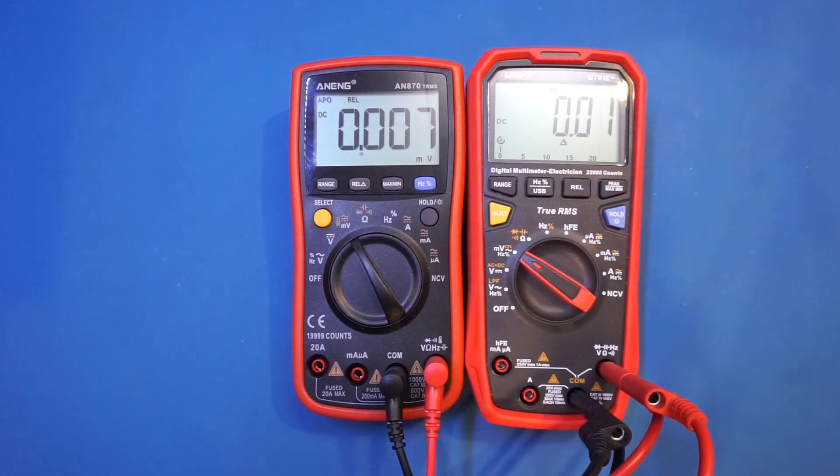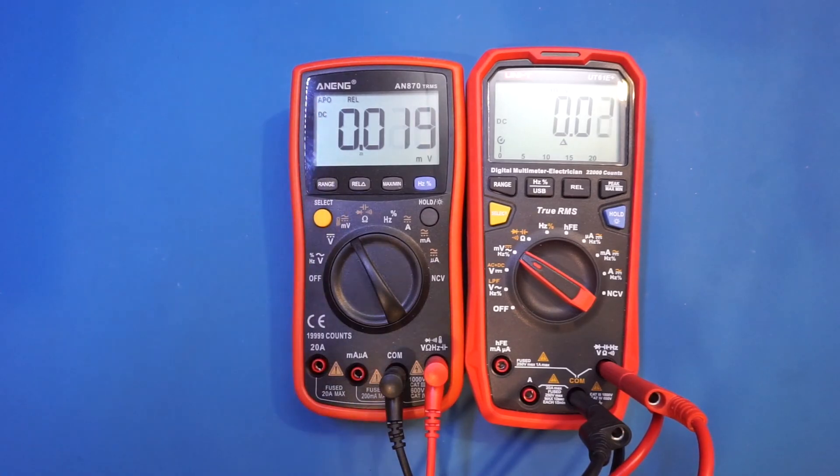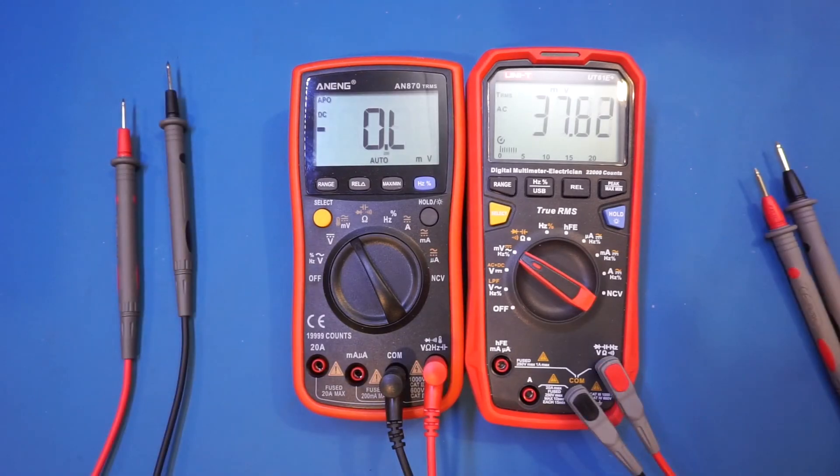Now let's dial it back to zero and start 10 microvolts at a time. Ten, twenty. You see that once we hit that 20, we started seeing the AN870 registering correct reading. Thirty, forty, fifty, sixty, seventy, eighty, ninety, one hundred.